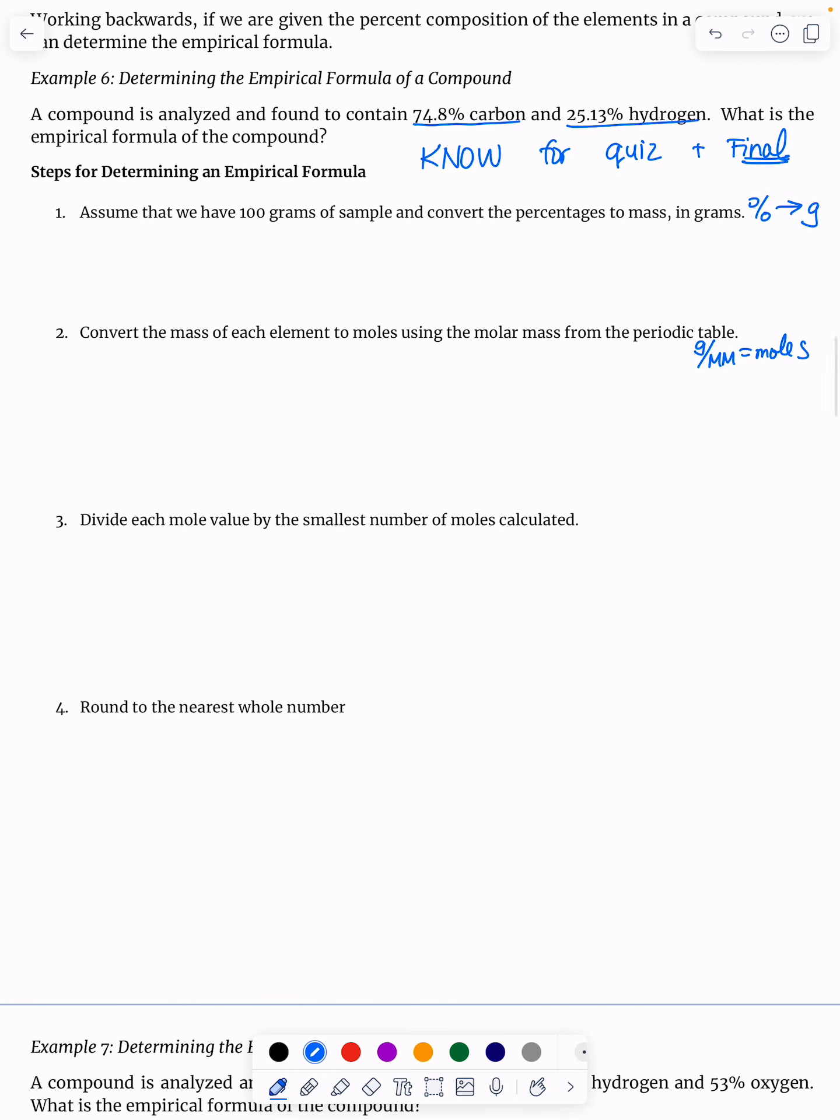Finally, we're going to get a bunch of different moles. Divide each moles by the smallest moles. So if I get four and I get six, I divide both of them by four, if that was an example. Round to the nearest whole number, and I'm going to make subscripts in empirical formula.